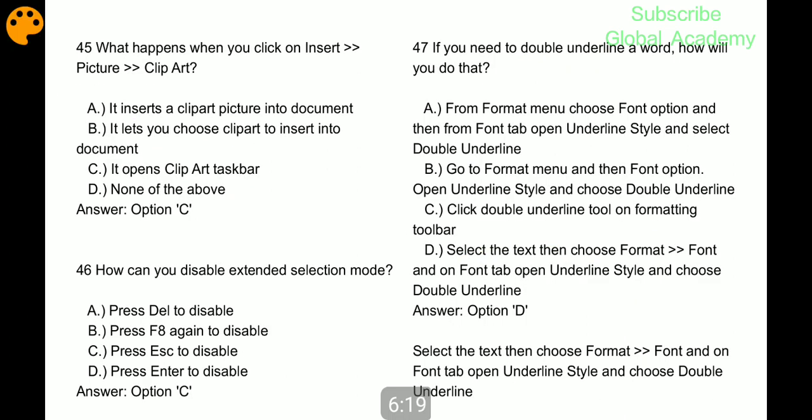What happens when you click on insert picture and clip art? It opens clip art text task bar. How can you disable extended selection mode? Press Escape to disable. If you need to double underline a word, select the text then choose Format Font.